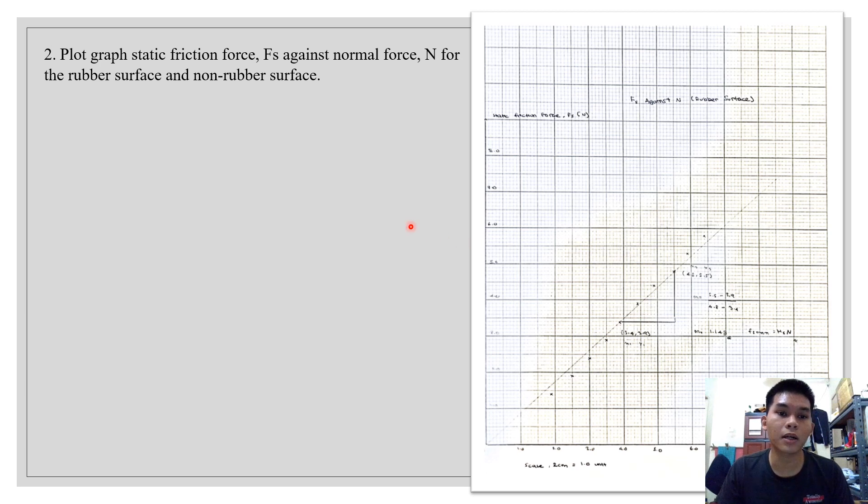The second question is about the plot to graph static friction force against the normal force in Newton for the rubber surface and non-rubber surface. I'll be showing you two graphs which is against normal force, I mean the normal force against the rubber surfaces and also the normal force against the non-rubber surfaces.